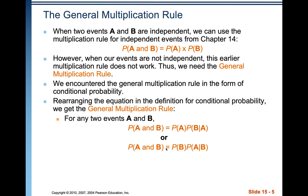Since we've talked about conditional probability, we can now discuss the general multiplication rule. It's great when two events A and B are independent — such as rolling a die and drawing one card out of a deck — the probability of A and B would just be the probability of A times the probability of B. But what if the two events aren't independent, like drawing two cards from a deck without replacement?